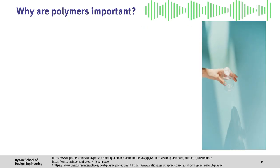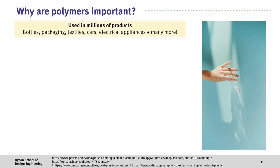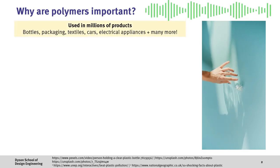First of all, let's talk about why polymers are important. In short, they're used in millions of products including bottles, packaging, textiles, cars, electrical appliances, and many others.